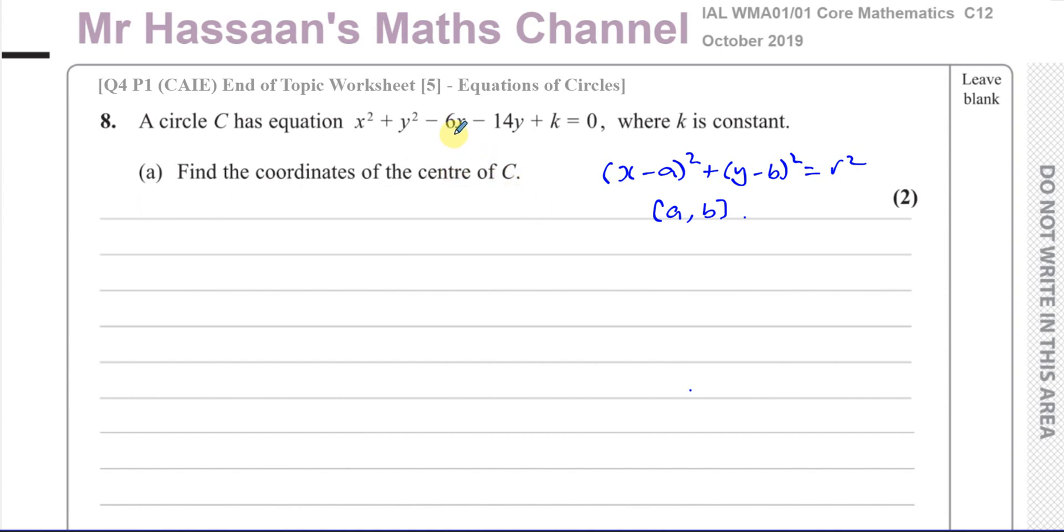To answer part A, we could do it quite easily because when we complete the square, we take half of the coefficient of x and y. So the coordinate is going to be half of this with the opposite sign, so 3, 7. We can see that straight away from the equation, but it's always best to show your steps.